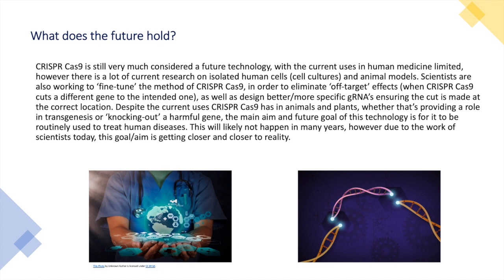Despite the current uses of CRISPR-Cas9 in animals and plants — whether providing a role in transgenesis or knocking out a harmful gene — the main aim and future goal of this technology is for it to be used routinely to treat human diseases. This will likely not happen for many years; however, due to the work of scientists today, this goal is getting closer and closer to reality.